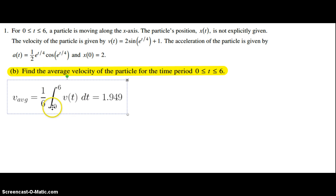Since we're going from 0 to 6, this is 1 over (6 - 0), which is 1/6. We integrate velocity from 0 to 6 and put that into the calculator. This is the integral of y1 from 0 to 6. The most important thing to remember is to multiply that result times 1/6. In doing so, we get a value of 1.949.